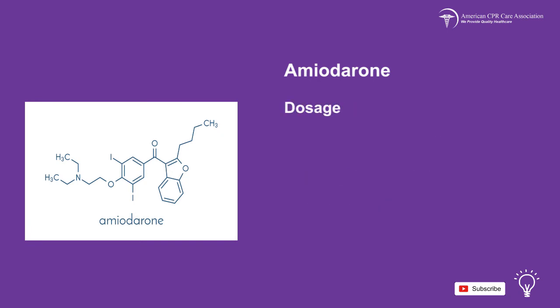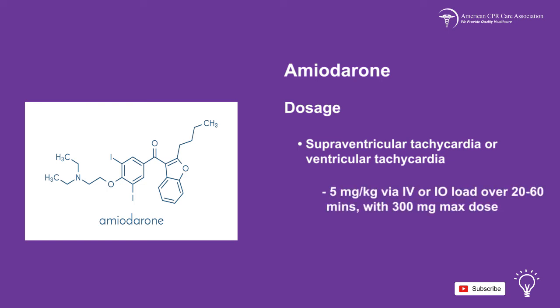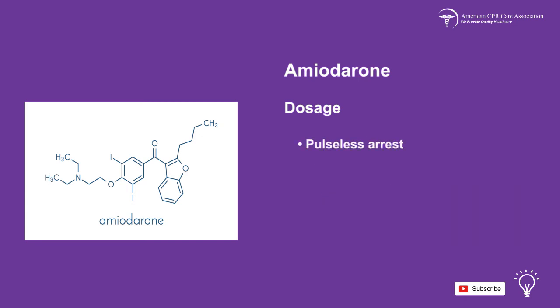The dosage of amiodarone is as follows. For supraventricular tachycardia or ventricular tachycardia, administer 5 mg per kg IV or IO load over 20 to 60 minutes, with a maximum dose of 300 mg. For pulseless arrest, administer 5 mg per kg via IV or IO bolus with a maximum dose of 300 mg.